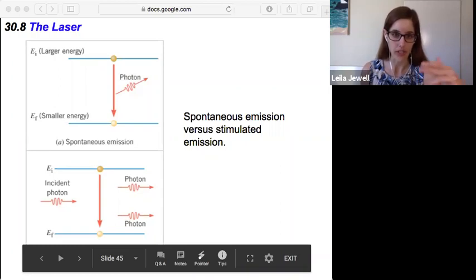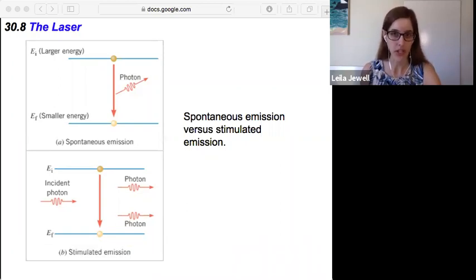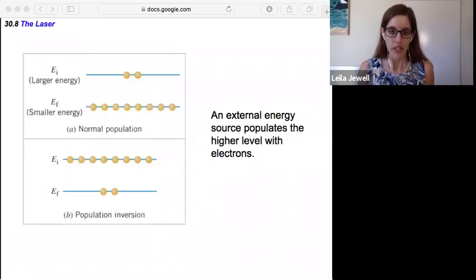Another thing that we're going to need in order to get this stimulated emission happening regularly enough to amplify everything is something known as population inversion. The default state of most atoms is the electrons are going to fill the smaller, lower energy level first. There will be some in higher energy levels, but it's not the default place to be. We like to be as lazy as possible.